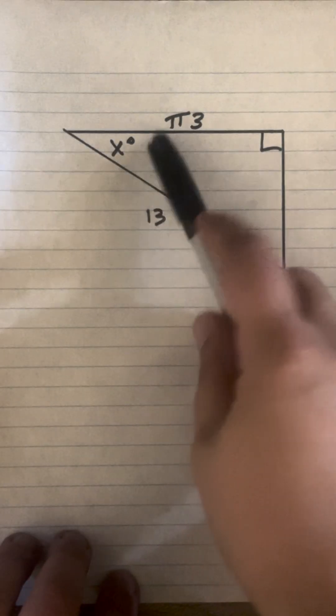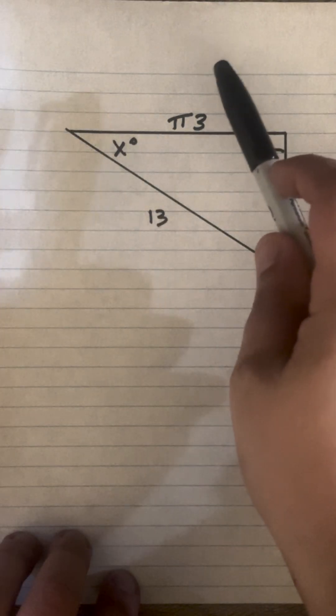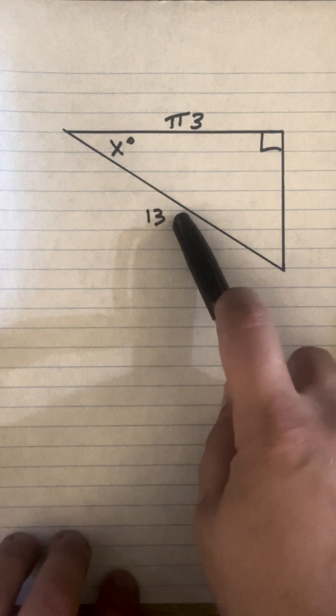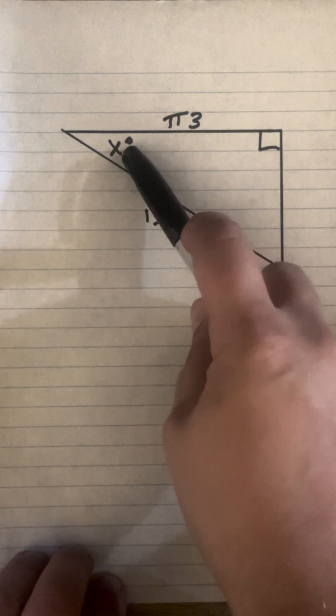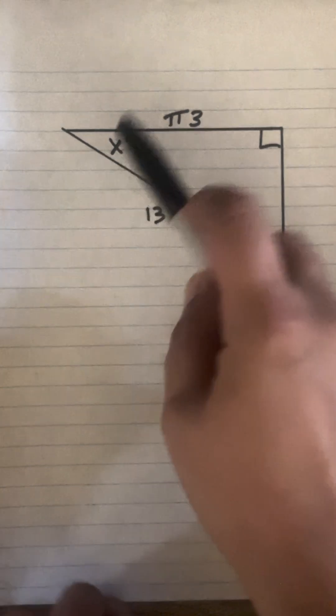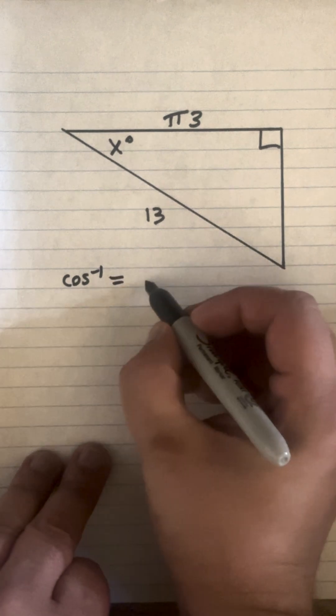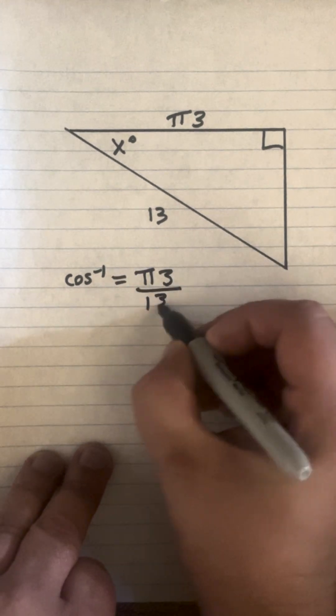Okay, we're going to solve for x. So let's look at what we have. We don't know x, but we know the adjacent over hypotenuse. That's going to give us cosine. And because we're looking for the angle, that's going to be an inverse operation. So we'll do inverse operation of cosine equals pi times 3 over 13.